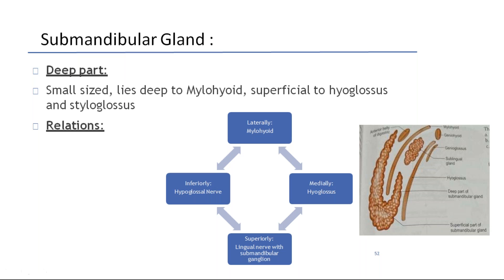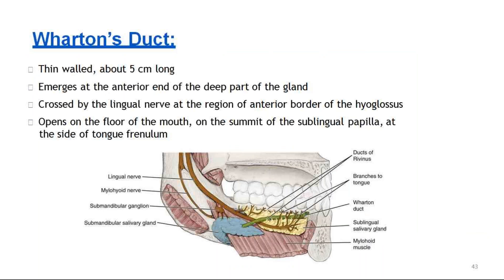The duct draining the submandibular gland is Wharton's duct — thin-walled, about 5 cm long, emerging at the anterior end of the deep part of the gland. It is crossed by the lingual nerve at the region of the anterior border of hyoglossus. It opens on the floor of the mouth on the summit of the sublingual papilla, at the side of the lingual frenulum.